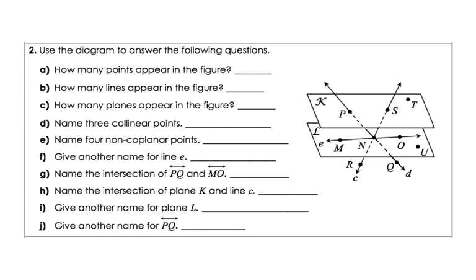Now on your notes we're on example two. I'm going to do B, D, F, H, and J, and then you'll do the other questions in practice when we're finished. The first question B: how many lines appear in the figure? I have one, two, three — and remember the dotted lines go through the planes — so that would be three.